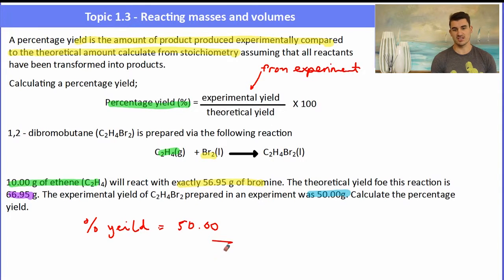In this case, it was 66.95, and then we multiply that by 100 to give us our percentage yield. Doing that calculation, we work out the percentage yield to be 74.68%.